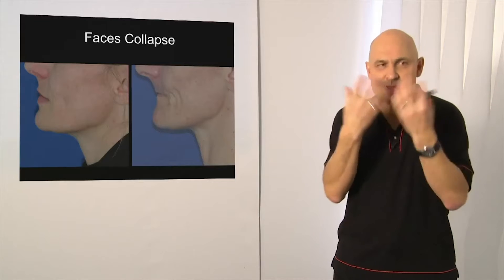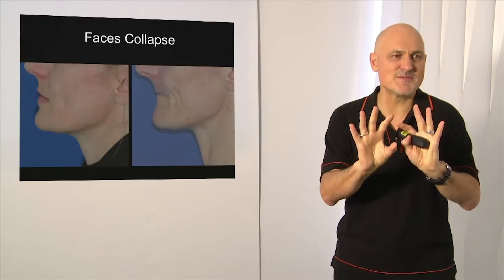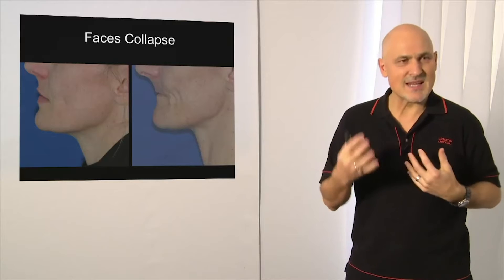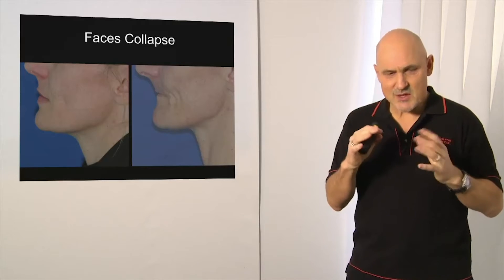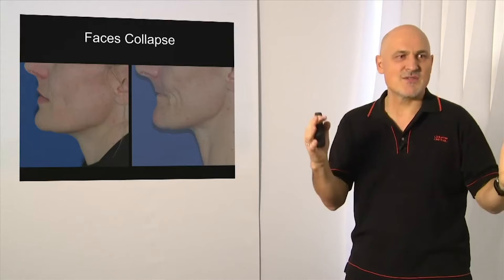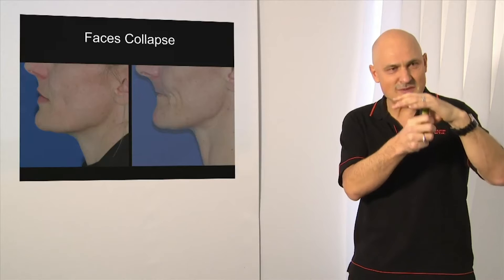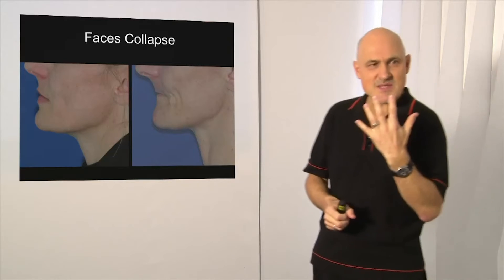But all the teeth and the jaw bone are there to hold the face in the right position. And in my lectures, I often give the analogy of the face and the teeth and the jaw bone being a little bit like the canvas of a tent with tent poles underneath. If you lose the tent poles, the canvas collapses. Well, the same happens with the face.